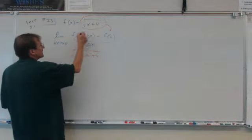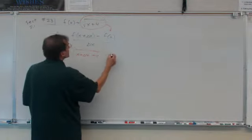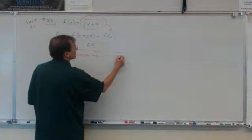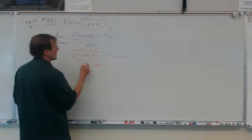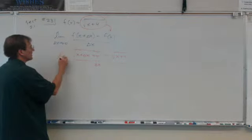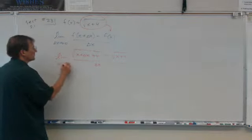That's going to be this part here and then minus root x plus 4. So you see how that corresponds and then there's a delta x in the denominator. We're going to find a limit of this as delta x goes to 0.